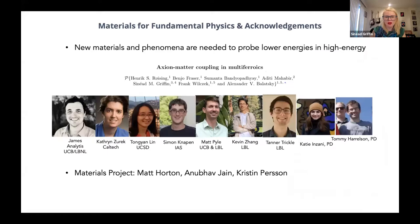In summary: we can use quantum materials and materials informatics to think about new materials and ideas for detecting low-mass dark matter particles. With only 5% of the universe as normal matter, can we design experiments probing how dark matter couples with different types of orders in materials? We also described designing new multi-order topological phases, and showed that metallic 'failed' calculations from high-throughput searches are actually useful for different types of physics questions.